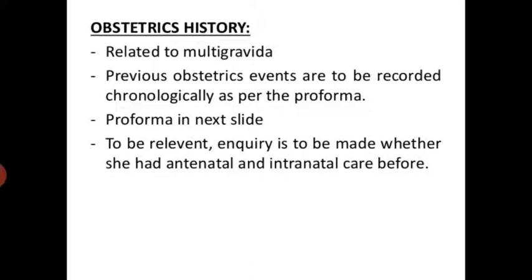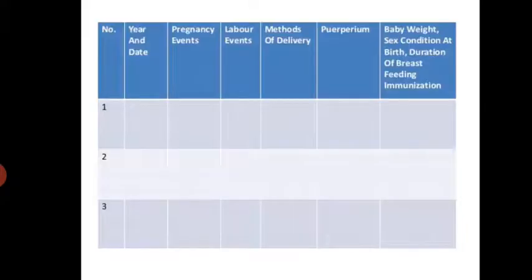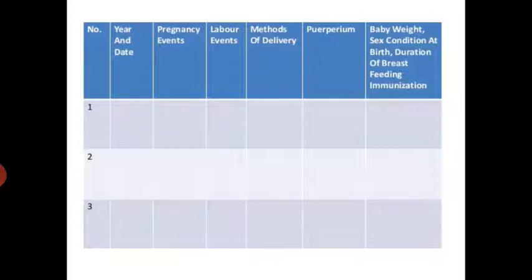Obstetrical history related to multigravida: previous obstetrical events are to be recorded chronologically as per a proforma. Inquiry is to be made whether she had antenatal and intranatal care before. The proforma includes: year and date, pregnancy events, labour events, method of delivery, puerperium, baby weight, sex, condition at birth, duration of breastfeeding, and immunization.